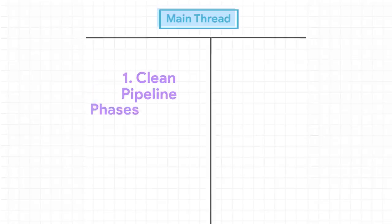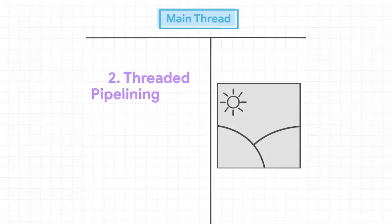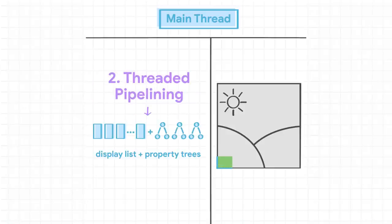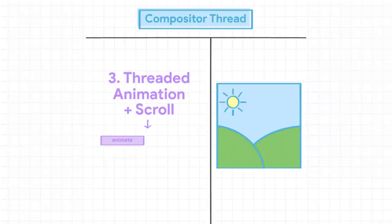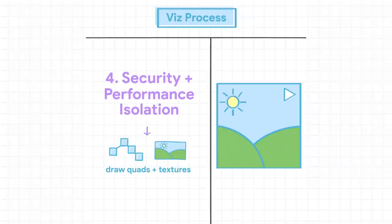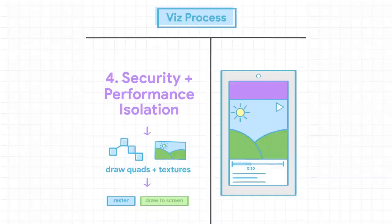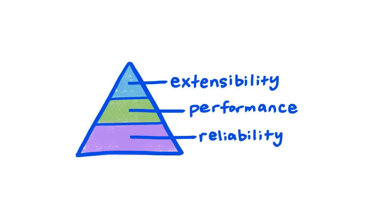The RenderingNG architecture puts in place a rendering pipeline with clearly defined pipeline phases. It uses data structures that can easily be passed across threads and processes. It supports running all animations and scrolls off the main thread in all cases, and it has excellent security and performance isolation for tabs and iframes. There were three main areas in which Chrome was not good enough: reliability, performance, and extensibility.